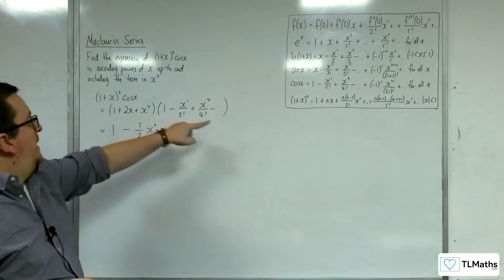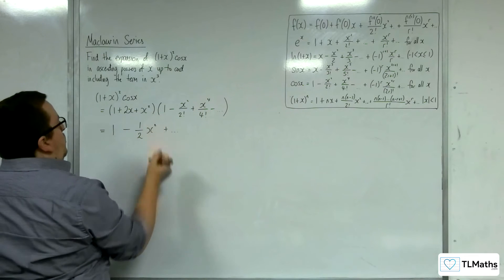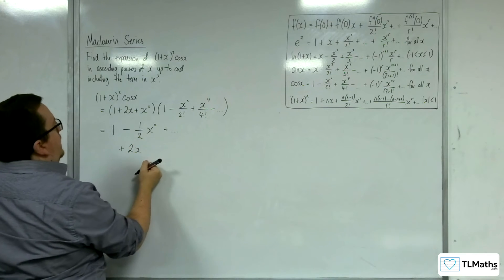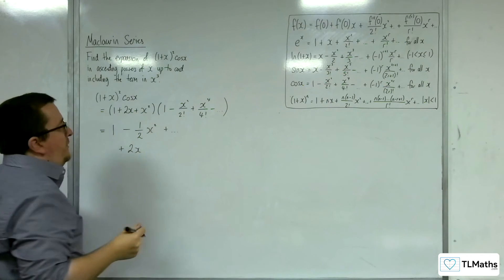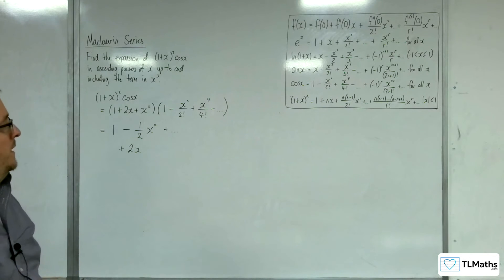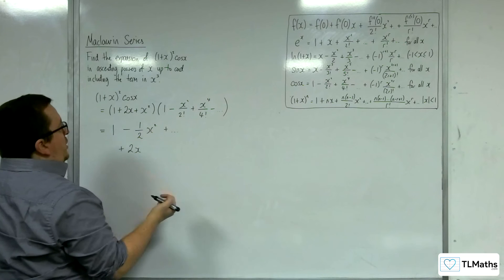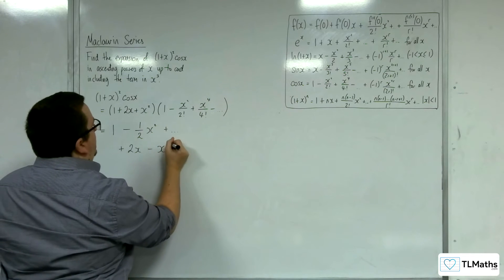Then I'm going to multiply the 2x by each of these terms. So 2x times 1, so I'm going to get a plus 2x. And then 2x times minus x squared over 2 factorial. So the 2 will cancel with the 2 factorial. So x times x squared is x cubed, and I'll have minus x cubed.